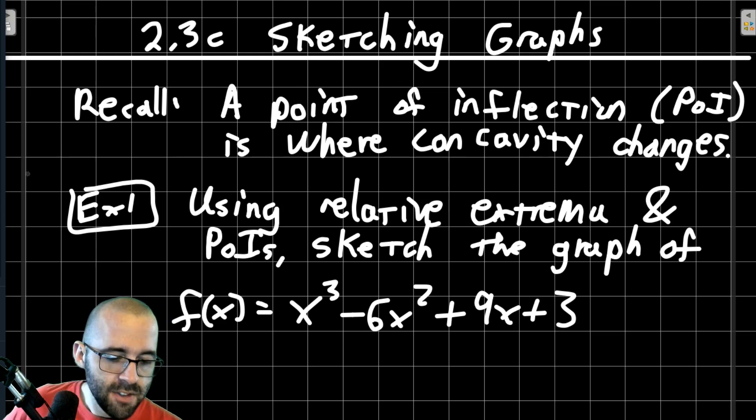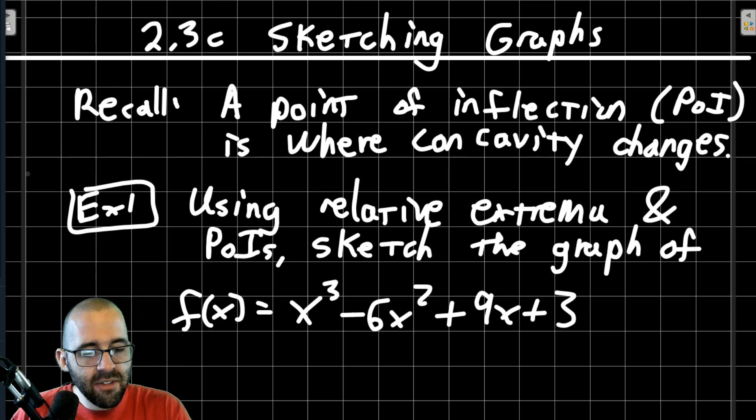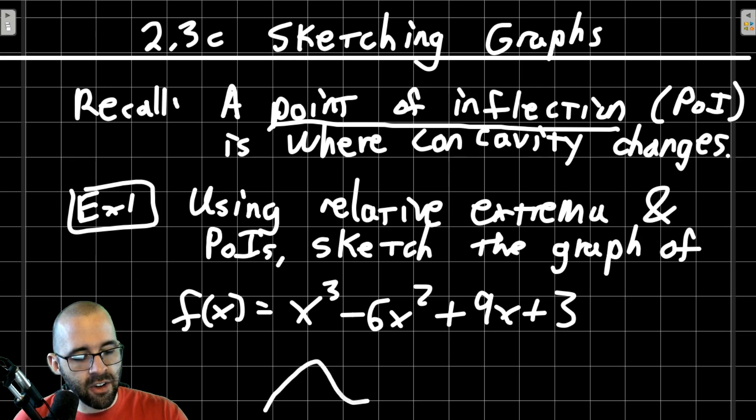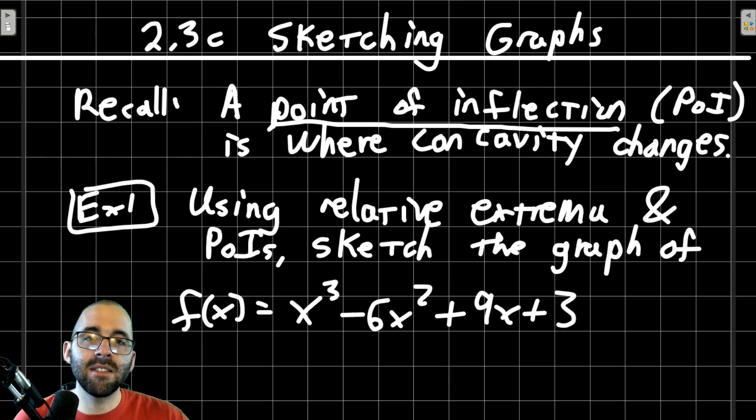Remember that a point of inflection, which I often abbreviate as POI, is a point where the concavity changes. Sometimes points of inflection, if we have something like this, it's this point in the middle where it goes from concave down to concave up. We're going to be finding points of inflection by finding when the second derivative equals 0 and seeing whether the concavity changes.